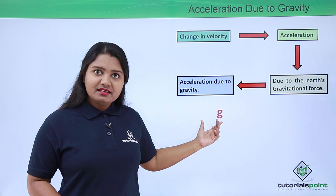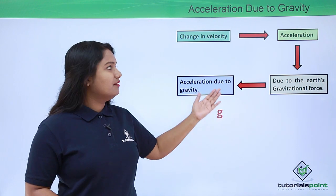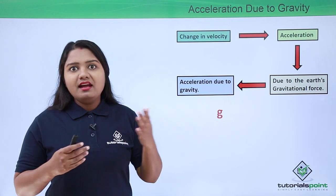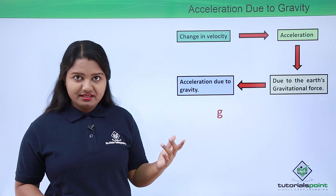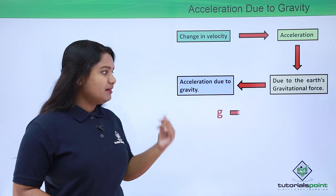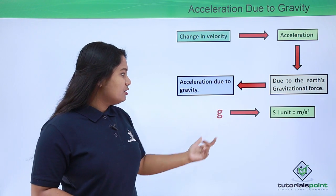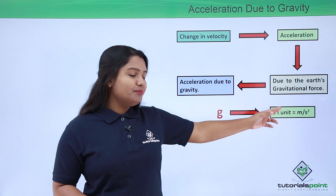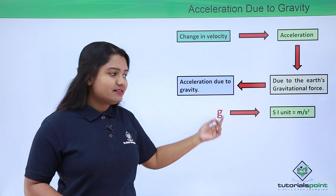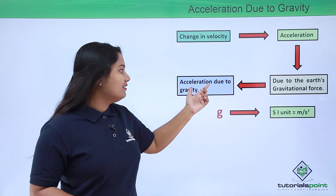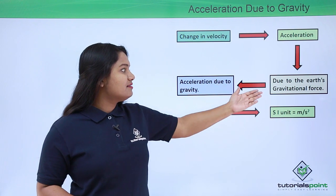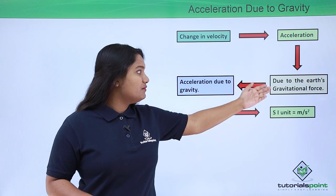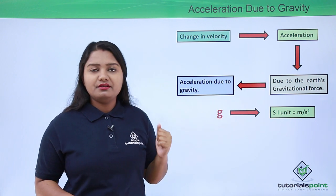We denote this acceleration by the symbol small g. This acceleration has the same SI units as normal acceleration, which is meters per second squared. The only difference is in the name and symbol, because it occurs due to a particular force — the gravitational force.